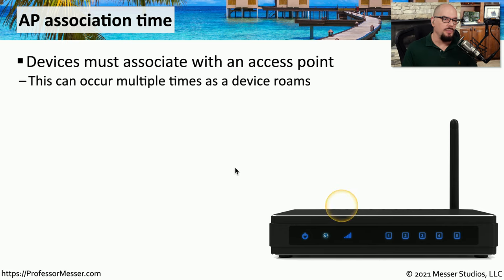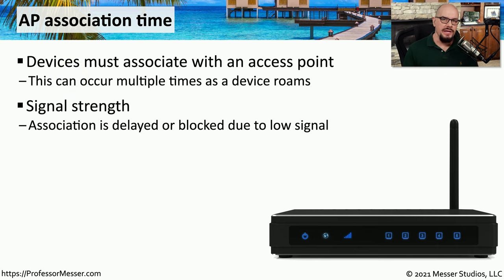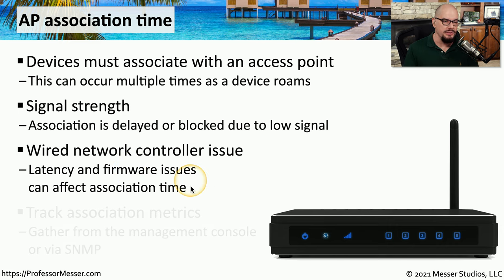One measurement of access point efficiency is the association time with devices trying to connect to the wireless network. A device normally associates with an access point quickly, and may change its association as you move. However, delays can occur — for example, if you're trying to associate with an access point that's very far away, you may have a problem due to a low or blocked signal. You should also look at the connection between the access point and the wireless controller, as latency problems or firmware bugs in the controller can cause association time issues.